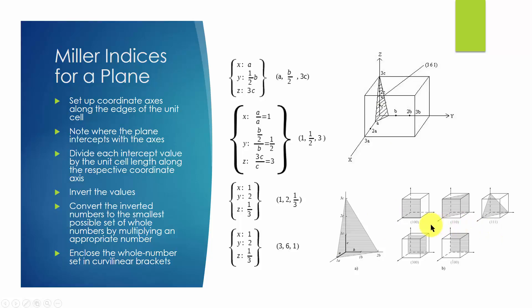There are two special cases we need to take care of. First, if the plane is parallel to an axis, the intercept along that axis is marked as infinity. When you invert infinity, you get the number 0.